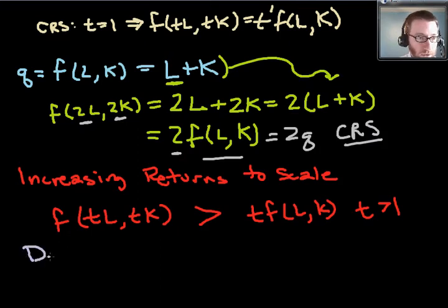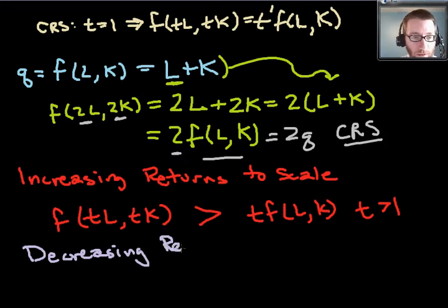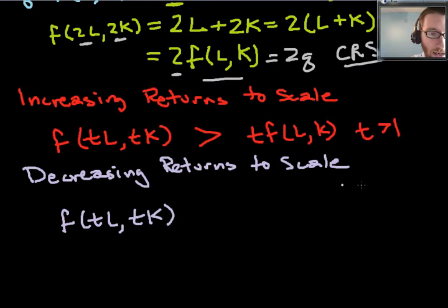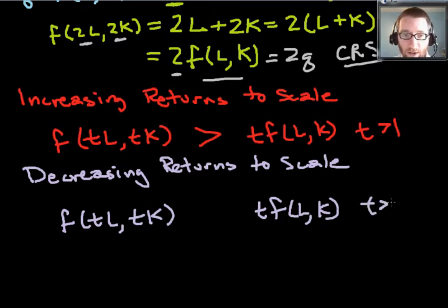We also might have decreasing returns to scale. For decreasing returns to scale, it still can be the case that when we increase our inputs we increase our output but it increases by a less than proportionate amount. So if we increase our inputs we've got tL and tK, and then we have what would be a proportionate increase in output t times f of L and K, and t has to be greater than 1. But if it's greater than 1 meaning we're increasing our inputs then we'll increase our output maybe but certainly not by as much as we've increased it.